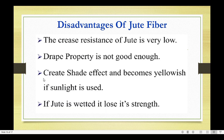Disadvantages of jute fiber: the crease resistance of jute fiber is very low, drape property is not good enough, it creates a shade effect and becomes yellowish if exposed to sunlight, and if jute is wetted it loses its strength. These are the disadvantages of jute fiber.